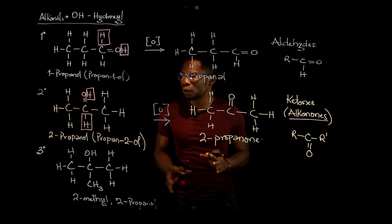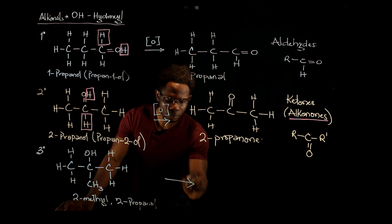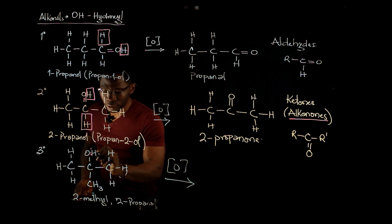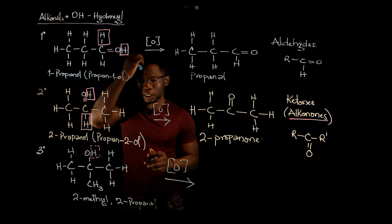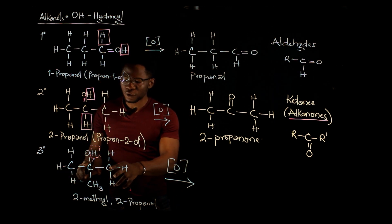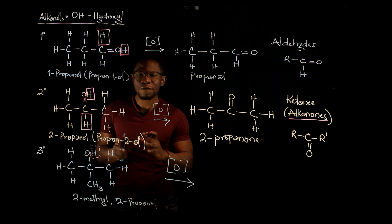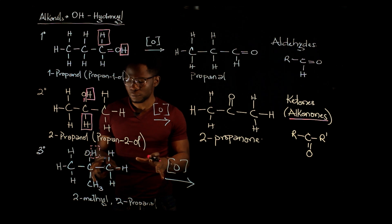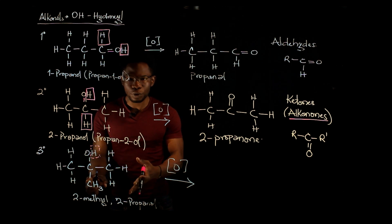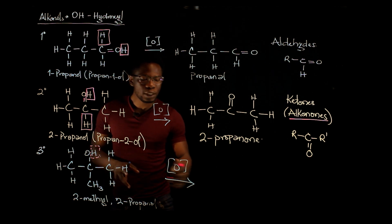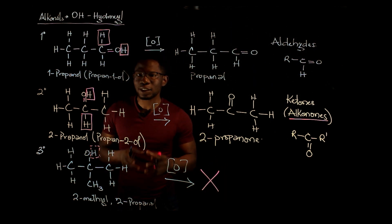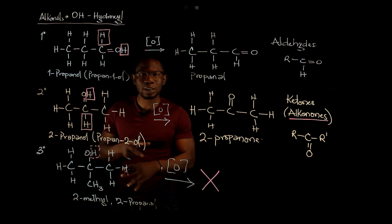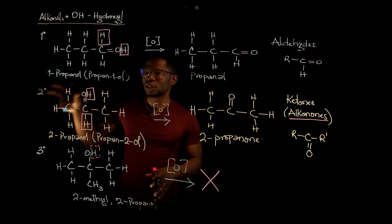Let's see what happens when we oxidize a tertiary alcohol. Following the same rule, we're supposed to lose the hydrogen attached to the hydroxyl group. But if you look carefully, there is no free hydrogen atom attached to the carbon attached to the hydroxyl group — only carbon atoms and alkyl groups are present. So it is impossible to oxidize a tertiary alcohol. You can only oxidize primary and secondary alcohols.